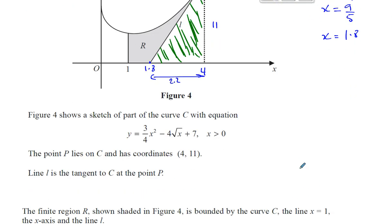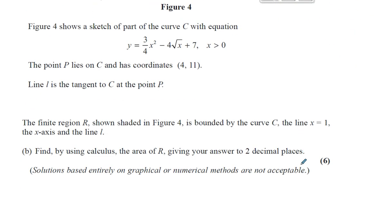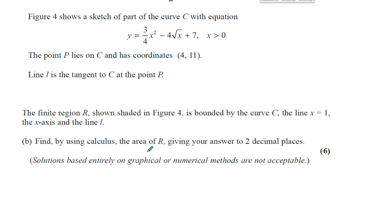So let's go ahead and do that. So first of all, let's find the area under the curve between 1 and 4. So you've got Y equals 3 quarters X squared minus 4 times, I'm going to write that as X to the power of a half. So it's ready to be integrated.